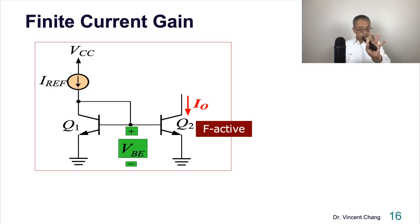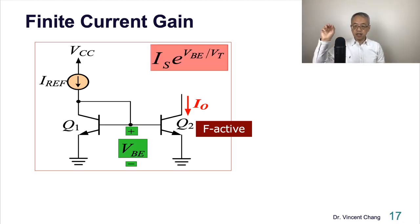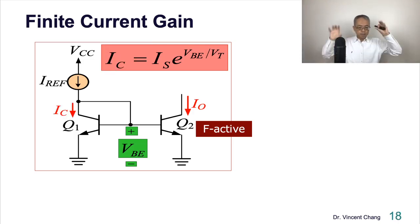When output transistor is in forward active region, let's assume the transistors are matched, and then they have the same VBE. If they match, that means they're going to have the same IC. Let me repeat that. Match means they have the same parameter, IS. The same VBE, same exponent, they're going to have the same IC.